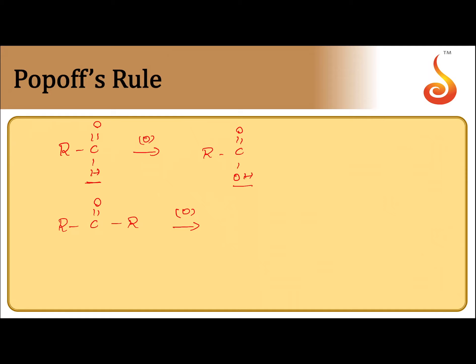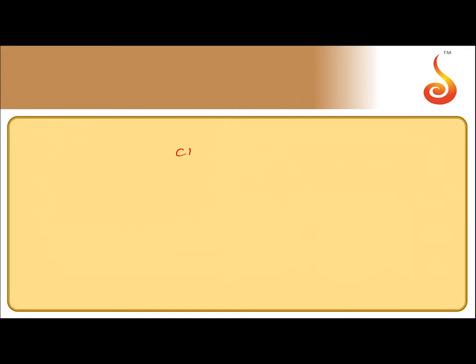Carbon-carbon bond cleavage occurs on either side of the ketone group, giving a mixture of carboxylic acids containing fewer carbon atoms than the original ketone. So ketones on oxidation give a mixture of carboxylic acids with fewer carbon atoms than the original ketone.